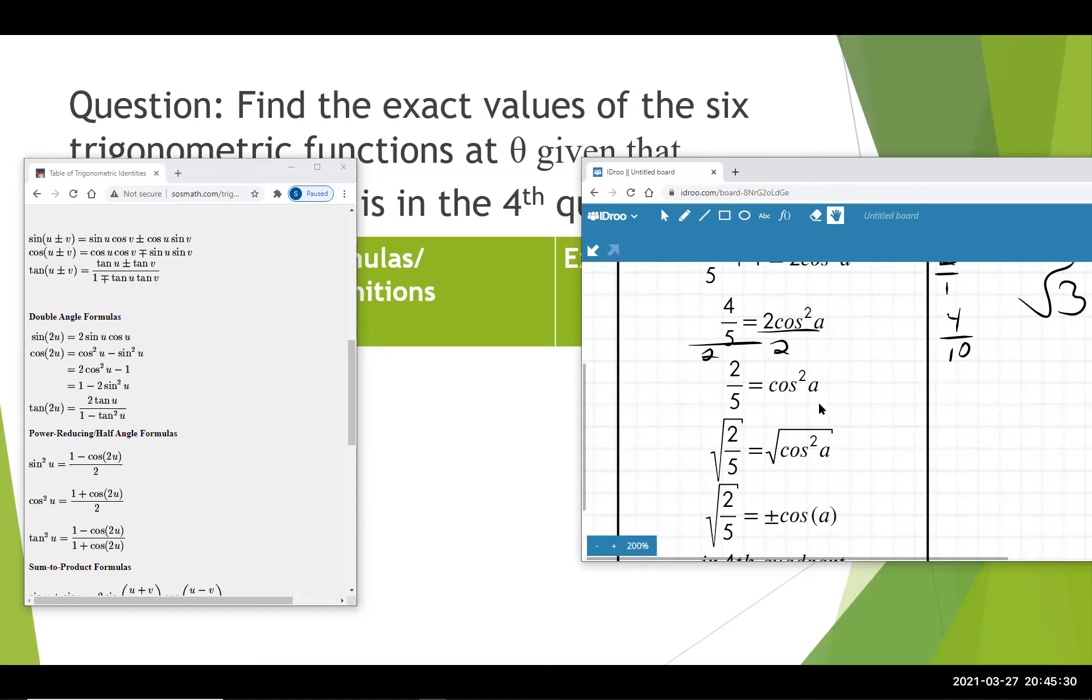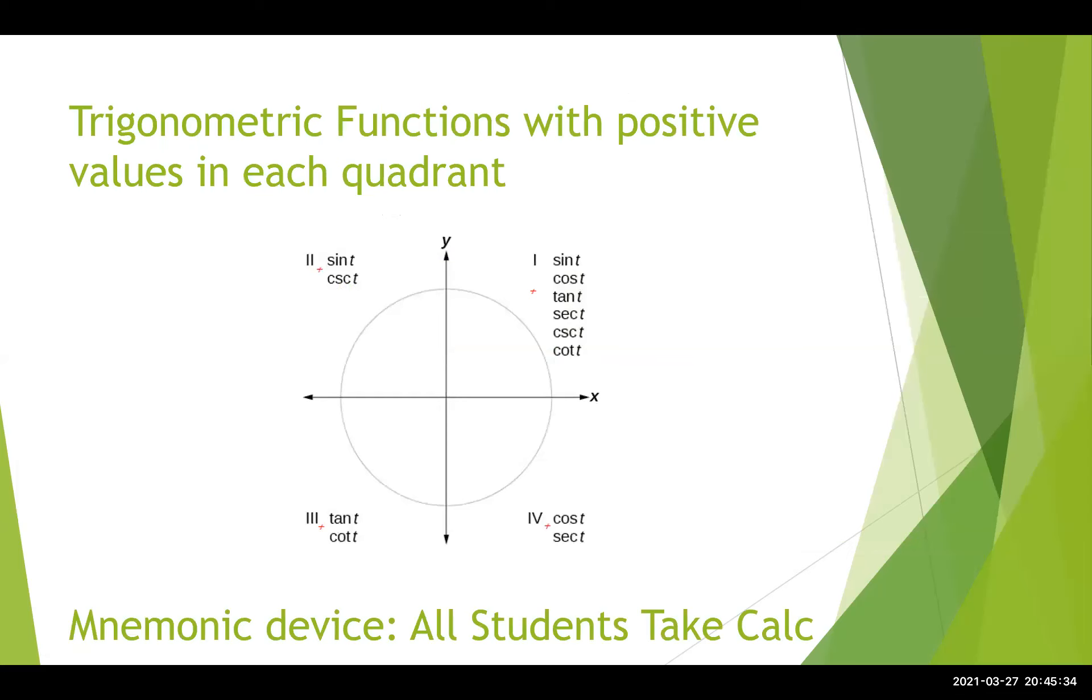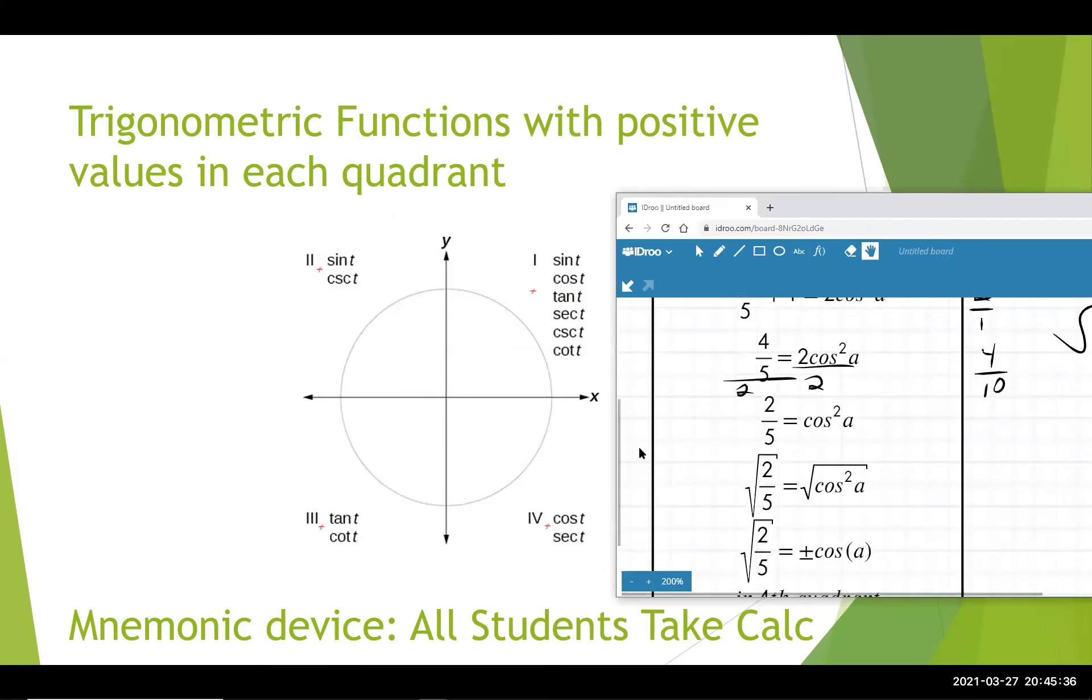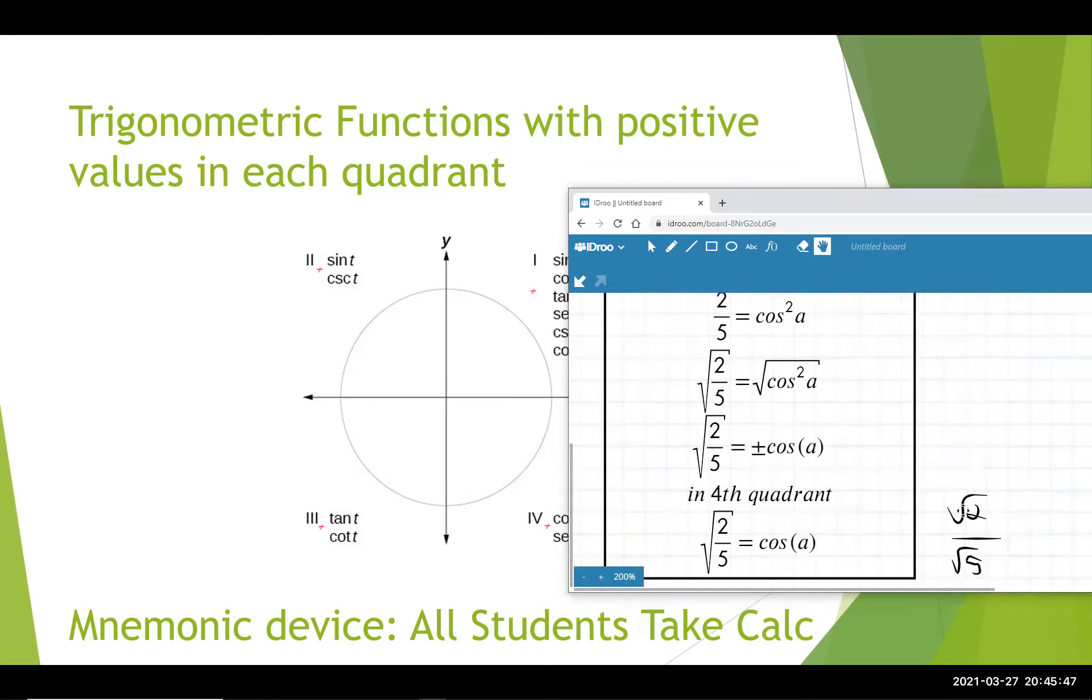But this is where this diagram from before comes into play. And we need to note that because we are in the fourth quadrant in this problem, we're just going to have that the cosine of a is equal to the square root of 2 over the square root of 5. Or you could just write it as square root of 2 over square root of 5.